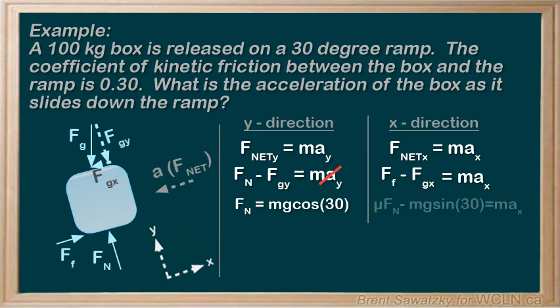So, μ Fn minus Fg sin 30 equals M AX. Some people would be tempted to replace Fn at this point with M G. But that would be wrong on a ramp problem, as proven in our Y direction. Fn equals M G cos 30. So, let's substitute that in.